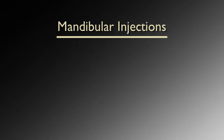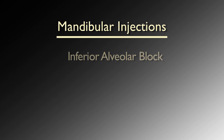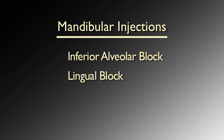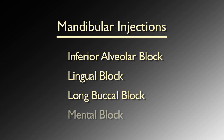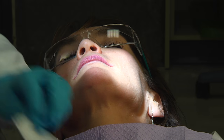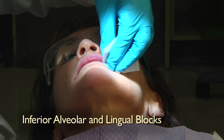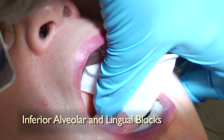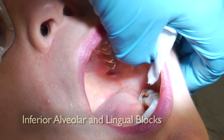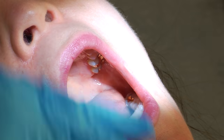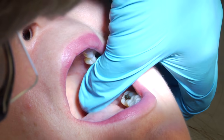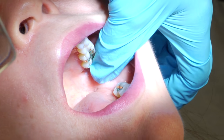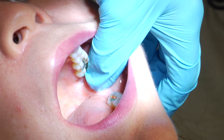The injections we will be demonstrating will be the inferior alveolar block, the lingual block, the long buccal block, and the mental block. The distraction points for the inferior alveolar and lingual will be with the thumb on the coronoid notch and the fingers of the hand resting on the angle and posterior border of the ramus.